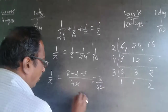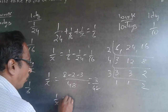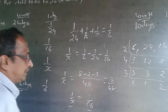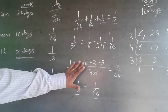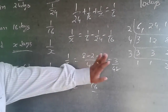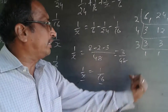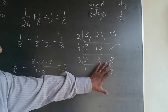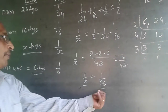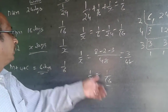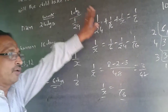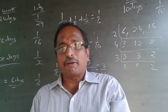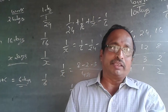3 by 48 equals 1 by 16, so 1 by x equals 1 by 16, meaning x equals 16. The child alone can do the work in 16 days. Subscribe to my channel — I will be adding questions every now and then.